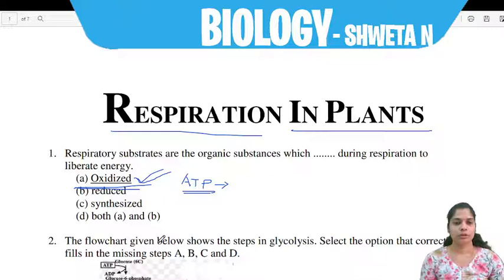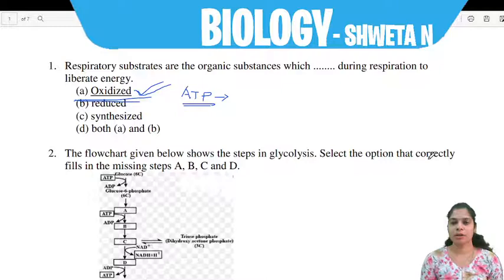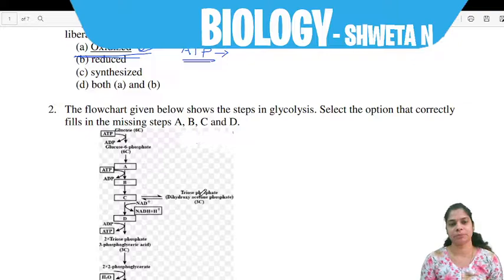Second question: The flow chart below shows the steps in glycolysis. Select the option that correctly fills in the missing steps A, B, C, and D. Here we need to identify the correct steps labelled A, B, C, and D involved in glycolysis.